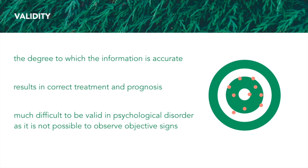So what is validity? Validity is the degree to which information is accurate. If you've taken a group four science class in the IB program, you've probably learned this. I found this target diagram to be really useful — I'll compare it with the next diagram in which I talk about reliability. If we see the dots are mostly centered around the center of the target, it shows how validity means it's more accurate.